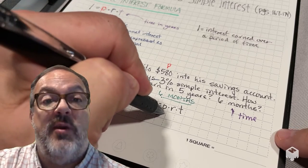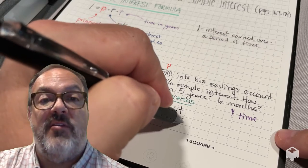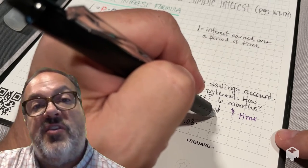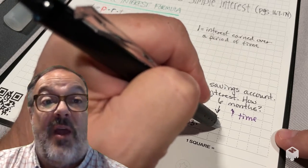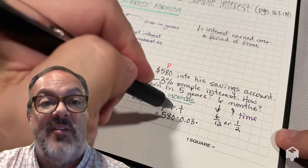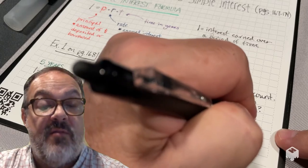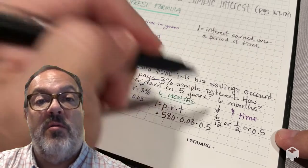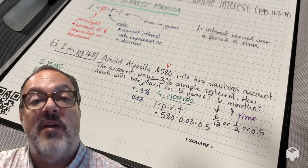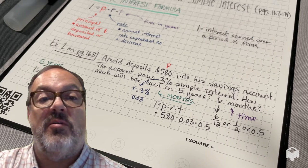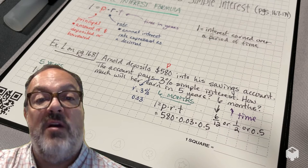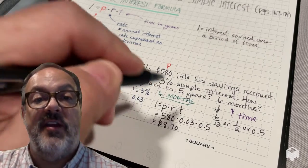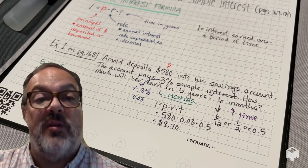Now let's see what happens when we only have the money deposited for six months. We'll start with the same equation, I equals PRT. The principal is still $580, the rate is still 0.03, but the time has changed. Instead of a whole year, we have six months — we can think of that as 6 over 12, or one half, which as a decimal is 0.5. So 580 times 0.03 times 0.5 gives us $8.70 interest earned after only six months.